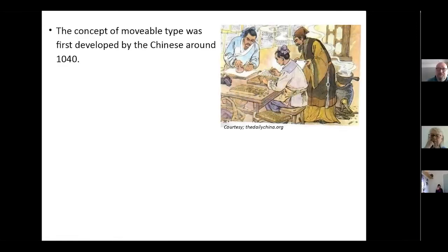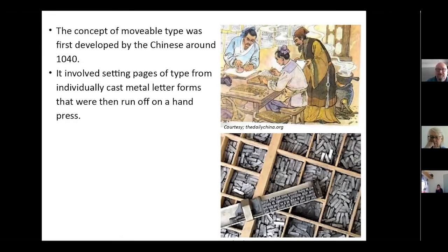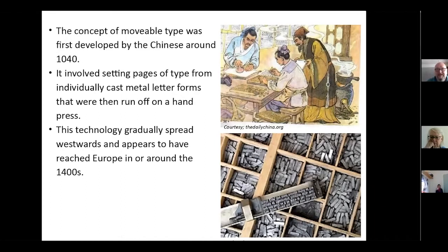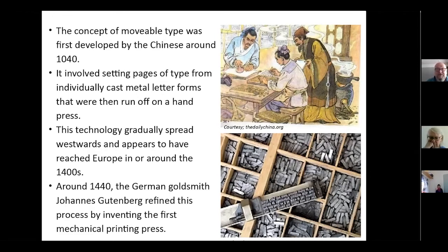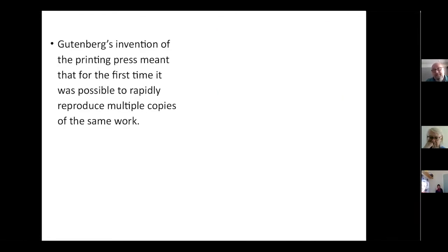Moving on a bit, the idea of movable type was developed by the Chinese around 1040, and that basically involved setting pages of type with individually cast letter forms, and then you could run these off on a hand press. We're not sure how it happened, but this technology seems to have spread westwards, reaching Europe around about 1400. The first real big epoch in that was 1440 when Johannes Gutenberg came across this system and used it to invent the first mechanical printing press, allowing multiple copies of the same thing to be made very quickly.